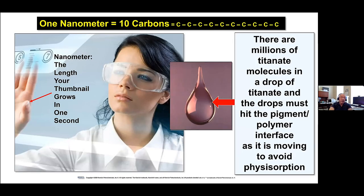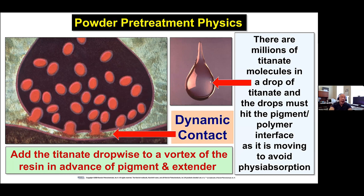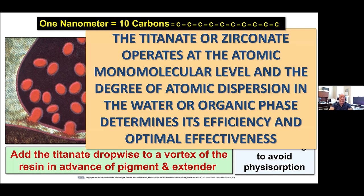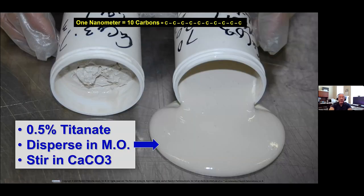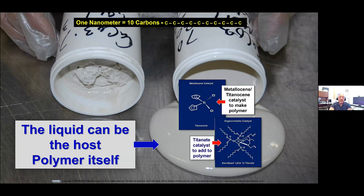There are millions of titanate molecules in a drop of titanate, and you have to hit the interface of the inorganic or graphene phase dynamically — everything's got to be moving. Spray application to a Henschel at 1,800 RPM, or completely solubilizing in the water phase, or emulsified in the water phase. If you're going to have the coupling agent in an organic-water phase, it's got to hit the interface in a moving, dynamic system — putting the coupling agent into a C20 aliphatic mineral oil first, then adding the calcium carbonate under shear.